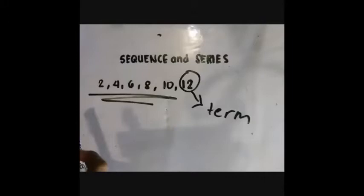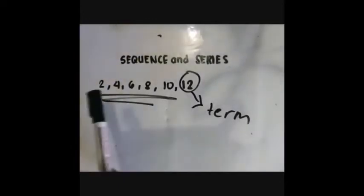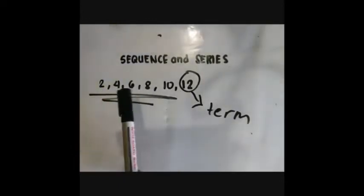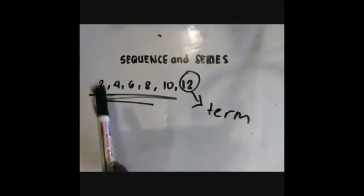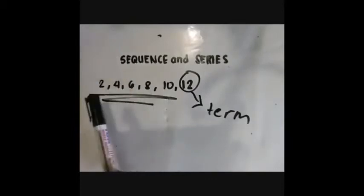These terms in the entire sequence are related to each other. The first term is related to the second term. Second term is related to third term. As we can notice, if we add 2 to the first term, it becomes the second term. If we add 2 to the second term, it becomes the third term, and so on.